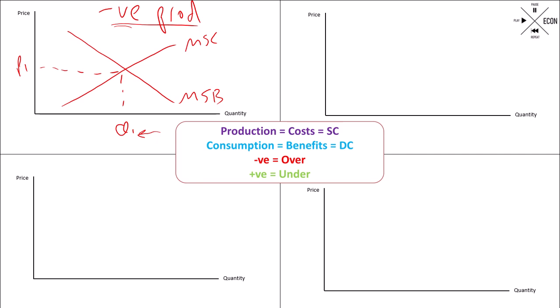Once you've done that, it's fairly straightforward. Production, as you can see in purple there, is to do with costs which we reflect in the supply curve. The only place we can put an equilibrium that would mean in the free market we're producing more than Q1 is there. So that is our marginal private cost. That's Q star — bring that across — that is P star.